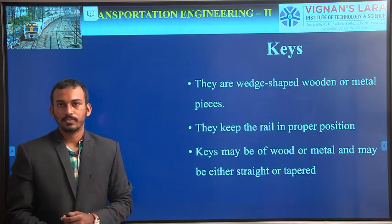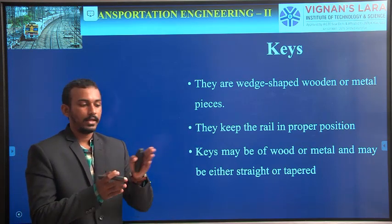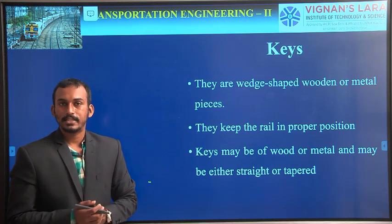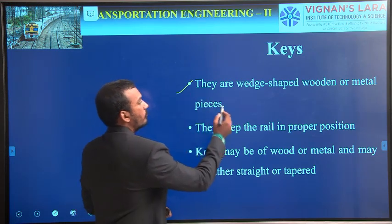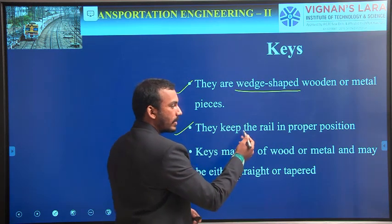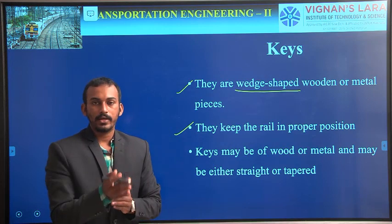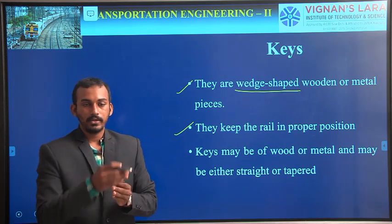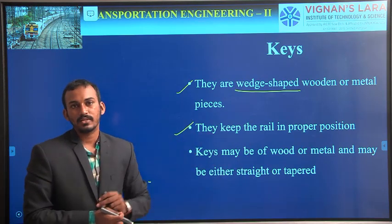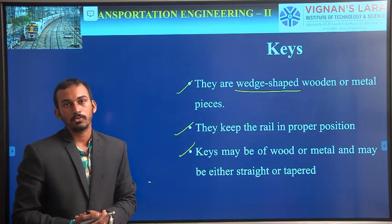That is keys. Keys are the arrangements to hold bull-headed rails or double-headed rails to the chairs. They are generally wedge-shaped wooden or metal pieces that keep the rails in proper position. Even though we use the chairs, the bull-headed or double-headed rails may get tilted inside the two jaws. In order to get them tightened, we use these keys. Only with the help of chairs, we cannot hold them in proper position — we also require these keys.